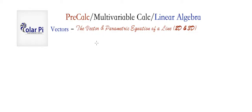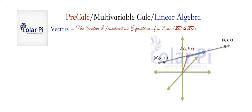Hey guys, welcome. So in this video I'm going to teach you about the vector and parametric equation of a line in 2D and 3D. So let's start by considering a line in 3D. In green we have the coordinate axes, and then in purple here we have our line in 3D, and we've got a point A on our line here whose position vector is drawn in maroon.